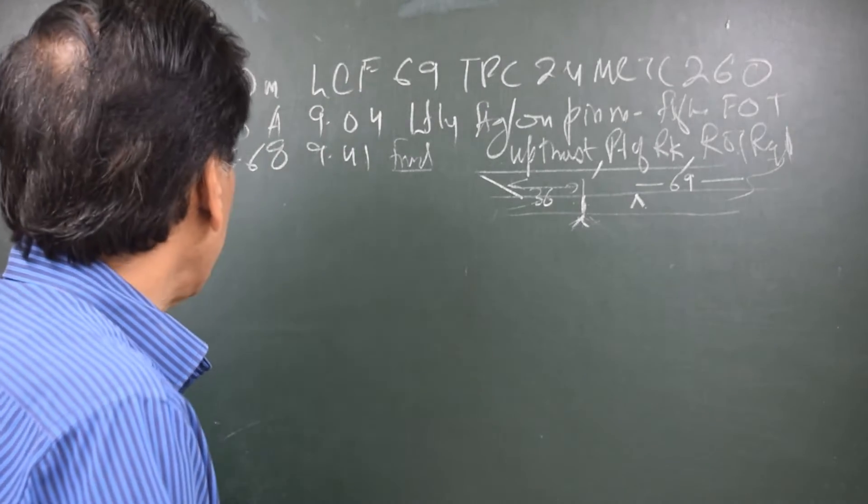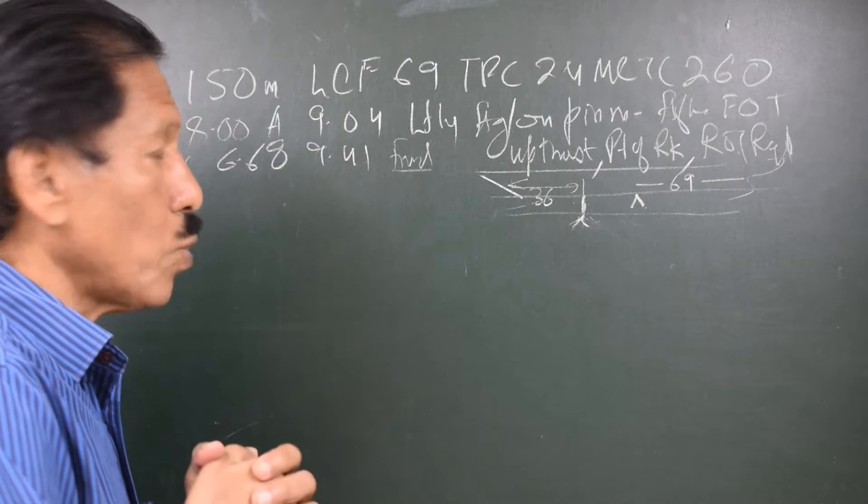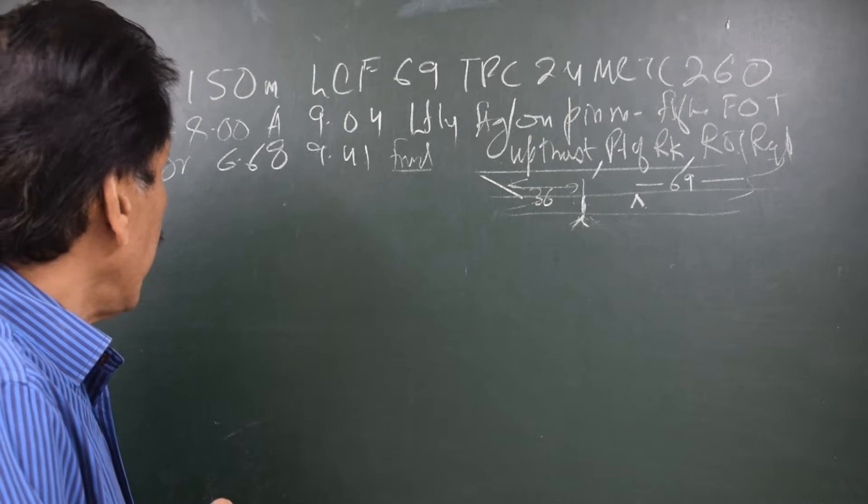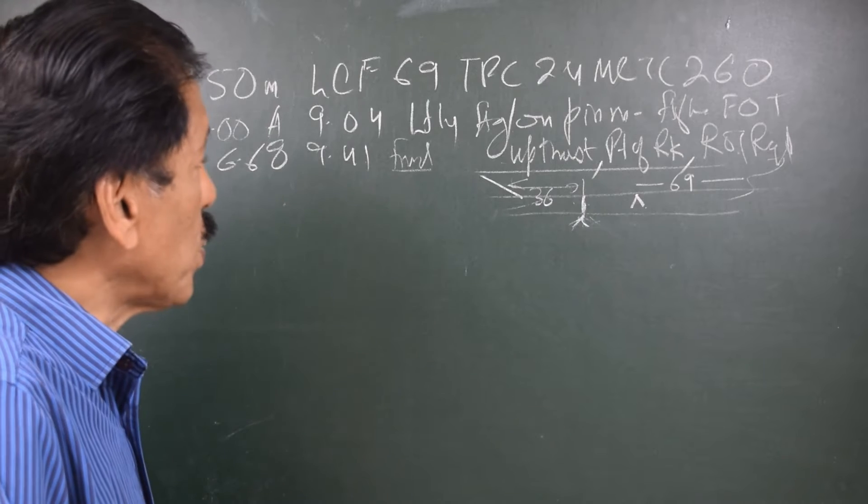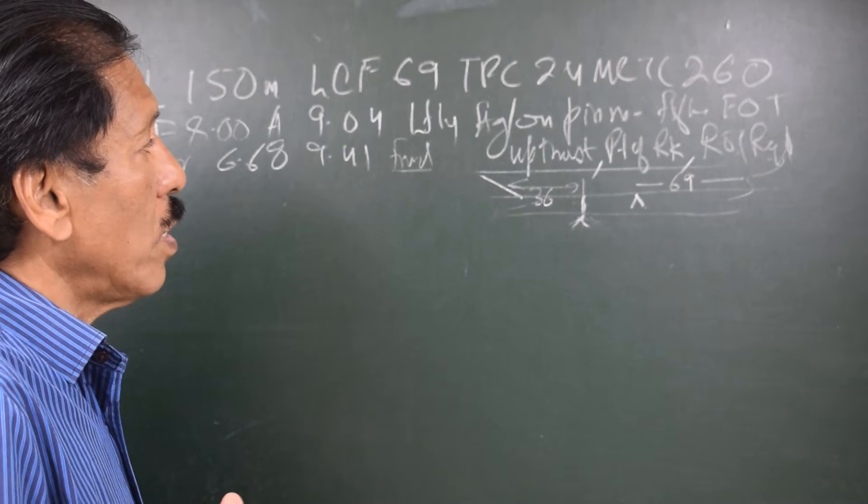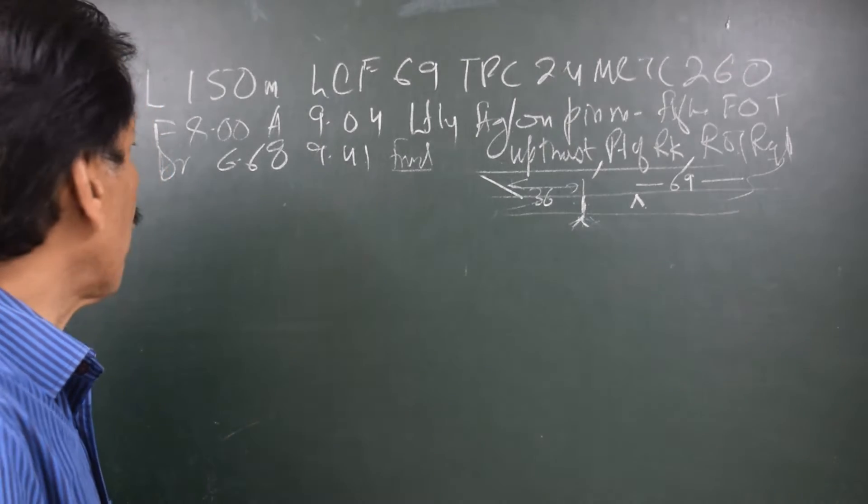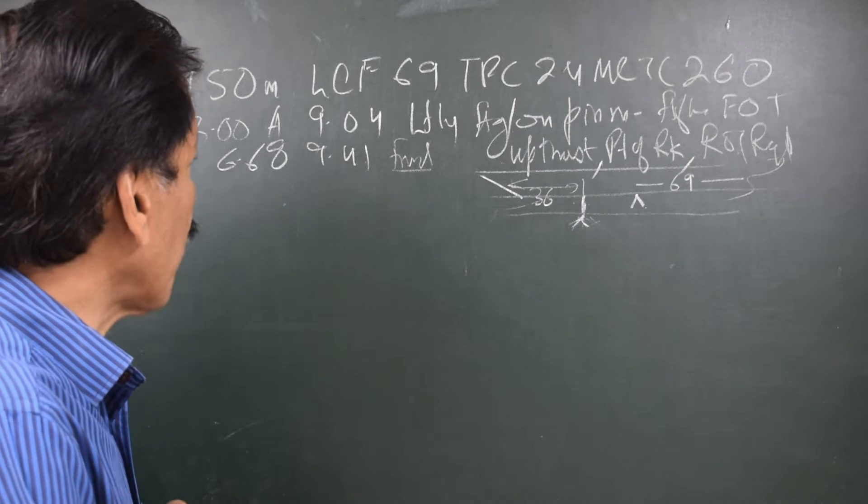The data is: length of vessel 150 meters, LCF 69, TPC 24, MCTC 260. Initial free floating drafts are 8 meters forward, 9.04 meters aft. She is aground on pinnacle. After a fall of tide, the drafts have become forward 6.68 and aft 9.41.